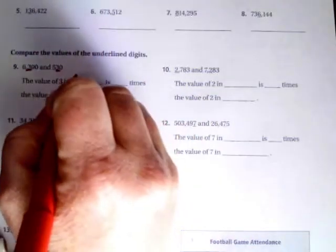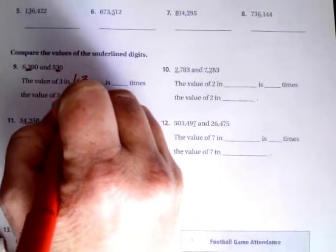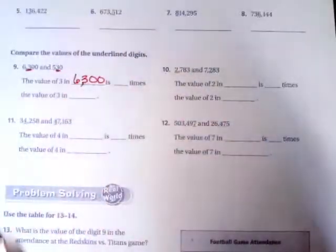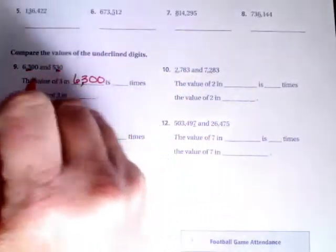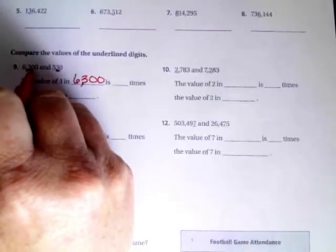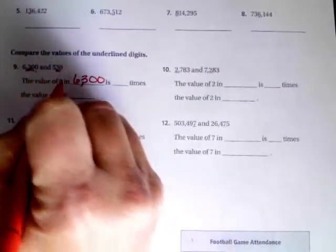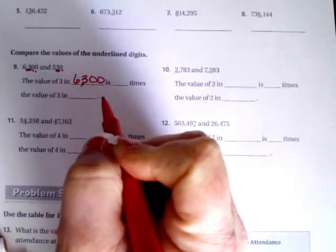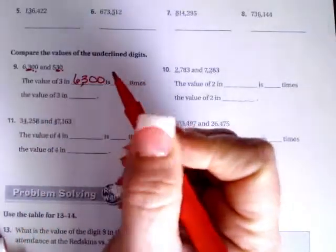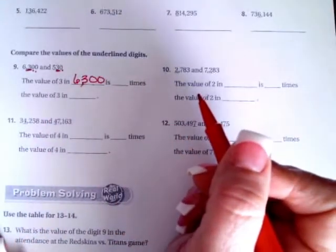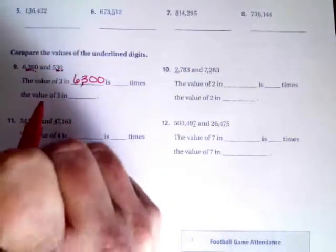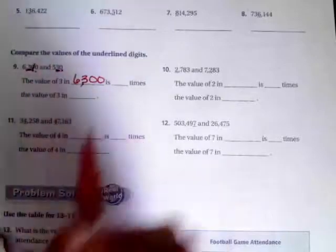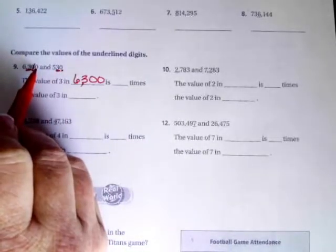So the three in 6300 is how many times more? Well, let's see. It has one zero, two zeros. This one has one zero, which means there's a difference of a zero on the end. When they're talking about zeros, it's talking about multiples of 10. So if there's one zero here, I'm going to cross that one off, which leaves us with one zero.